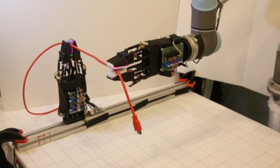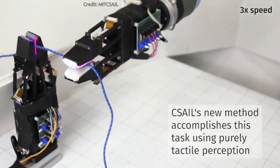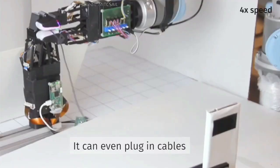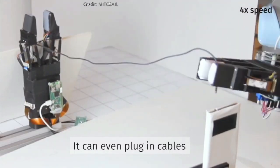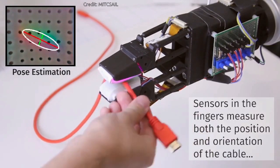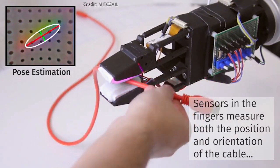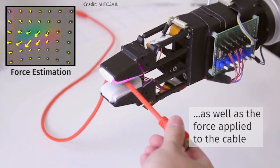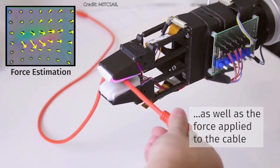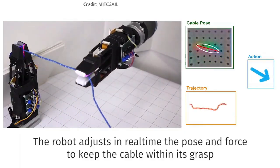The team's second step was to create a perception and control framework to allow cable manipulation. For perception, they use the GelSight sensors to estimate the pose of the cable between the fingers and to measure the frictional forces as the cable slides. Two controllers run in parallel: one modulates grip strength, while the other adjusts the gripper pose to keep the cable within the gripper.